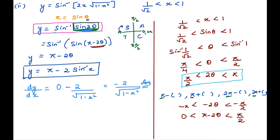So depending on the interval, the answers vary. For the first interval the answer is 2/√(1−x²), for the second and third it is −2/√(1−x²). When the angle is not in the principal value branch, you need to rewrite it using pi minus, pi plus, or 2pi minus, choosing the option that lands within the principal value branch while keeping the function value unchanged.